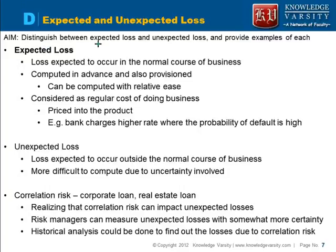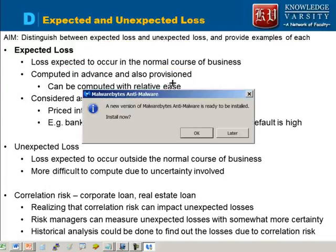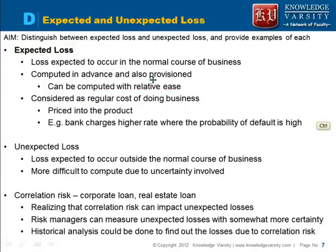The aim is to differentiate between expected loss and unexpected loss and provide an example of each. Expected loss is a loss expected to occur in the normal course of business. It is computed in advance, and banking and financial entities provision these losses because they can be computed with relative ease.